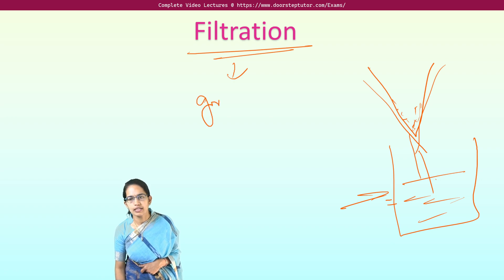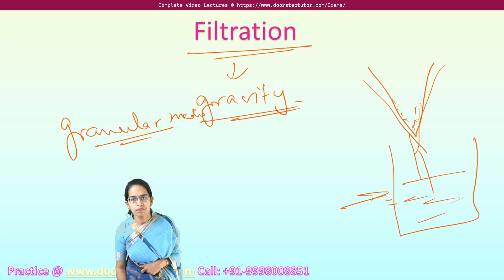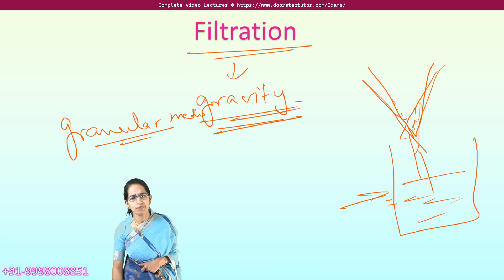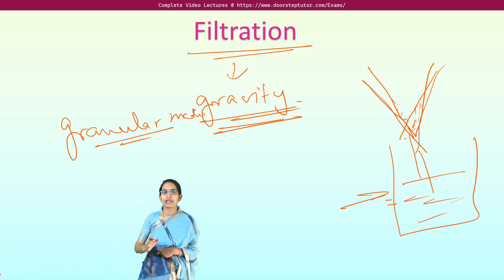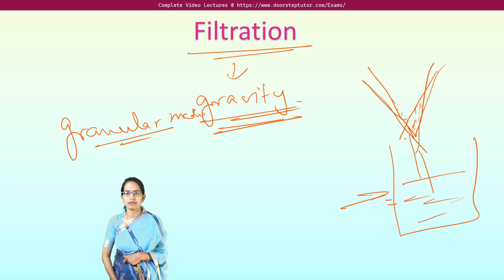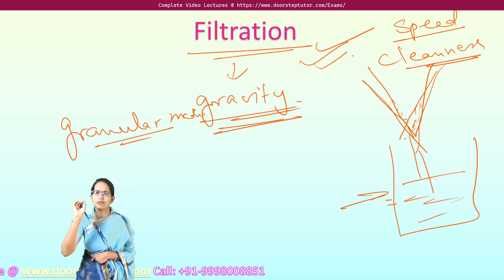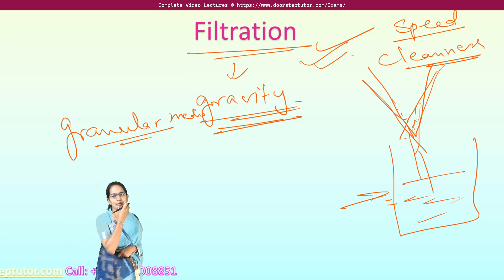The most common type is the gravity filter, also called the granular media gravity filter. These filters have membranes or artificial membranes and sand filters. The choice of filter depends on speed and cleanliness requirements—whether the pores are finer or thicker.